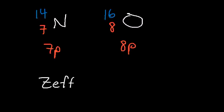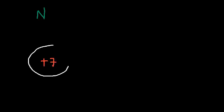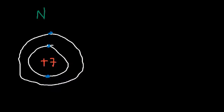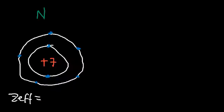Let's calculate the effective nuclear charge for nitrogen and oxygen. Nitrogen has 7 protons in its nucleus, so the nucleus has a charge of 7. The first shell has only 2 electrons — these are called core electrons. Nitrogen has a total of 7 electrons, with 5 in the second energy level as valence electrons. The effective nuclear charge on the valence electrons equals the atomic number (7) minus the 2 core electrons, so each outer electron feels an effective nuclear charge of +5.